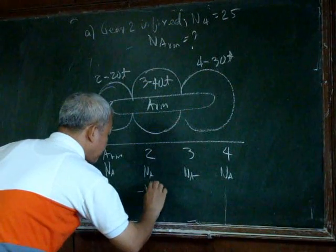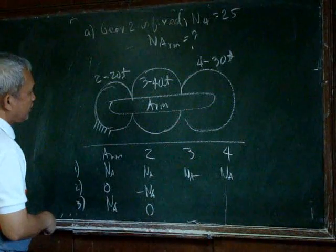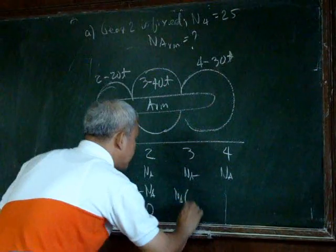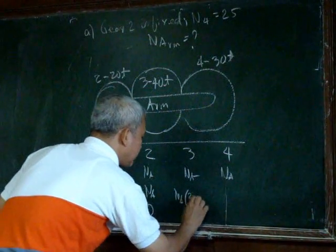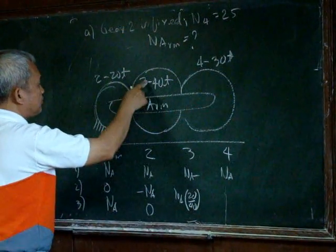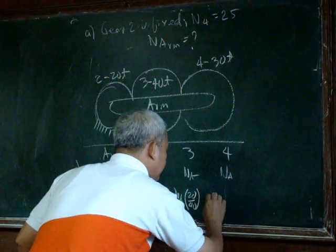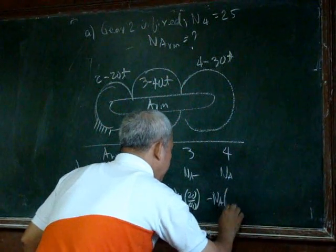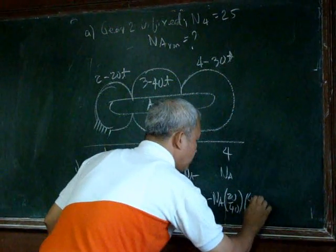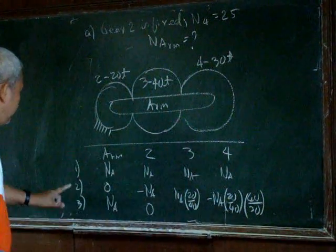That means we have to rotate it back by negative Na. And as we rotate it by negative Na, we have to have Na multiplied by 20 over 40 to have this rotation of the 3. And gear 4 has to have negative Na, 20 over 40, and 40 over 20 when this is fixed.